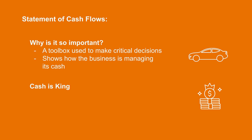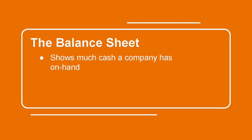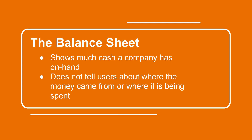Now cash is king in a business, as it's one of the key resources that allows companies to continue to operate into the future. Understanding where a company is getting its cash and how they're putting it into use in the business can give us great insight into the company's likelihood of future success. If an external user such as a bank or investor wants to find out how much cash a company has, they can very quickly look at a company's balance sheet. Now while the balance sheet tells us the actual amount of cash sitting in the company, it doesn't tell us anything about where the money came from and where it's being spent.